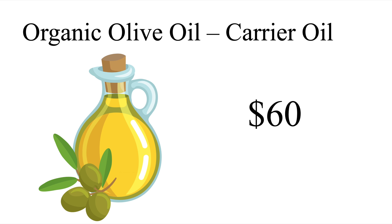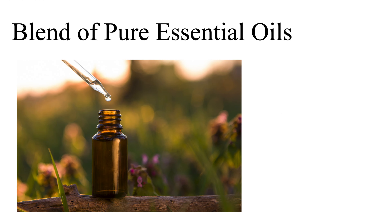We also need to purchase some essential oils, so we decide to go with a blend of pure essential oils for muscles. Some of the essential oils in this blend are chamomile, citronella, eucalyptus, lemongrass, peppermint, rosemary, spearmint, and oregano, just to name a few. We've purchased this blend for $28 for a two-fluid-ounce bottle.